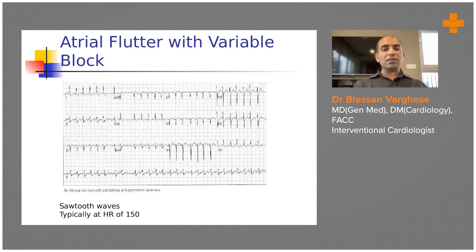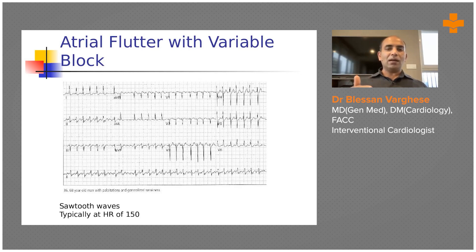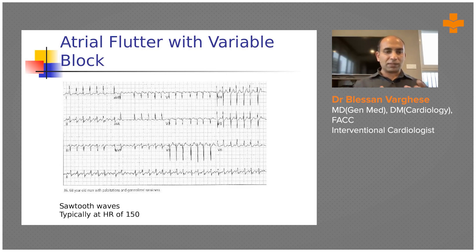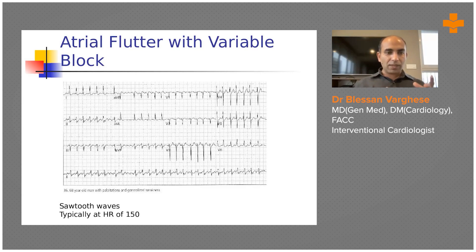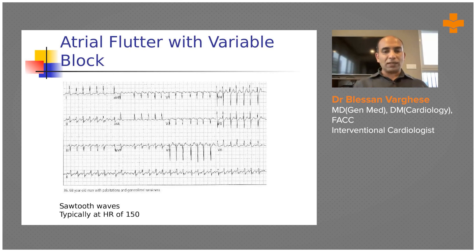This ECG shows atrial flutter with variable block. Atrial flutter is essentially a sibling of atrial fibrillation. With atrial flutter you will have more organized QRS complexes compared to atrial fibrillation, and the rate can be regular, regularly irregular, or completely irregular. The key feature is the flutter waves — unlike fibrillation waves, you can clearly delineate these sawtooth flutter waves. There are typical and atypical flutter patterns.